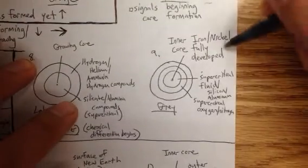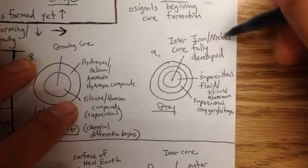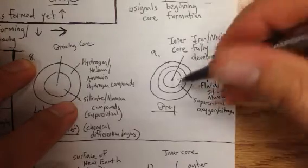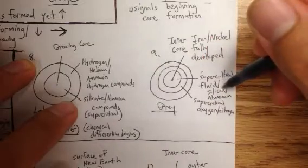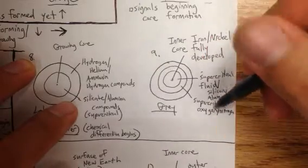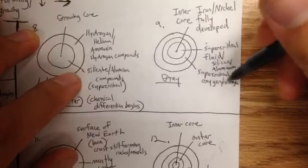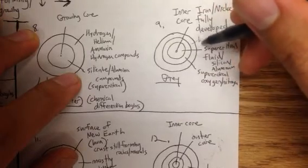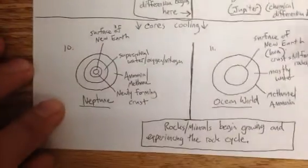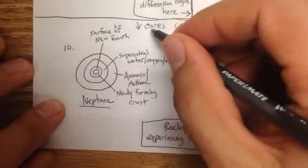Then you have your gray dwarf stage. This is when the iron and nickel core is fully developed, and all the material around it: supercritical fluid, the silicon and aluminum compounds and supercritical oxygen and hydrogen compounds surrounding that. Obviously you have your hydrogen and helium on the outside still.